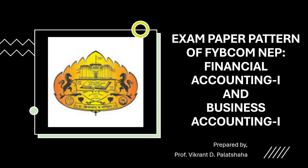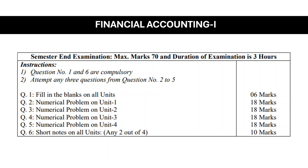First of all, we are beginning with the paper pattern of Financial Accounting 1. Financial Accounting 1 is a 4-credit subject, therefore the Semester End Examination will be conducted for 70 marks and the duration of the examination is 3 hours. In this question paper of Financial Accounting 1, there are a total of 6 questions, and Question No. 1 and Question No. 6 are both compulsory.